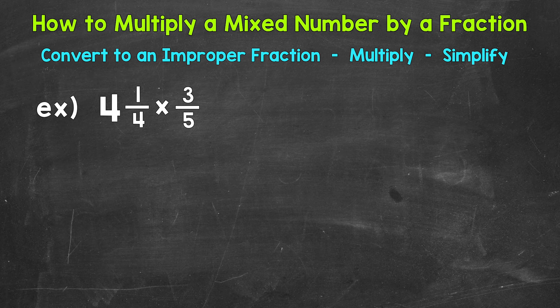Let's jump into our example where we have 4 and 1 4th times 3 5ths. Now the first thing that we need to do, we need to convert that mixed number to an improper fraction.